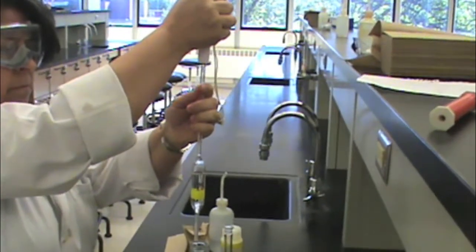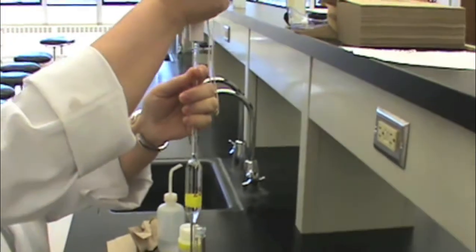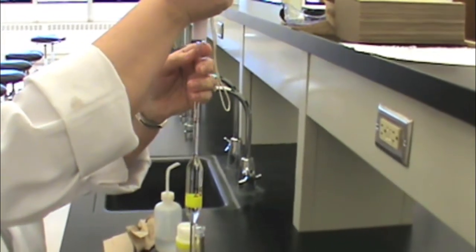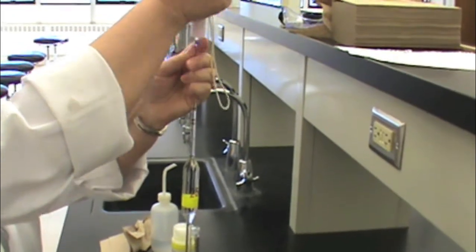You will want to make sure, again, that the liquid is above the line marking on the volumetric pipette before you remove the bulb and place your index finger over the top of the pipette.